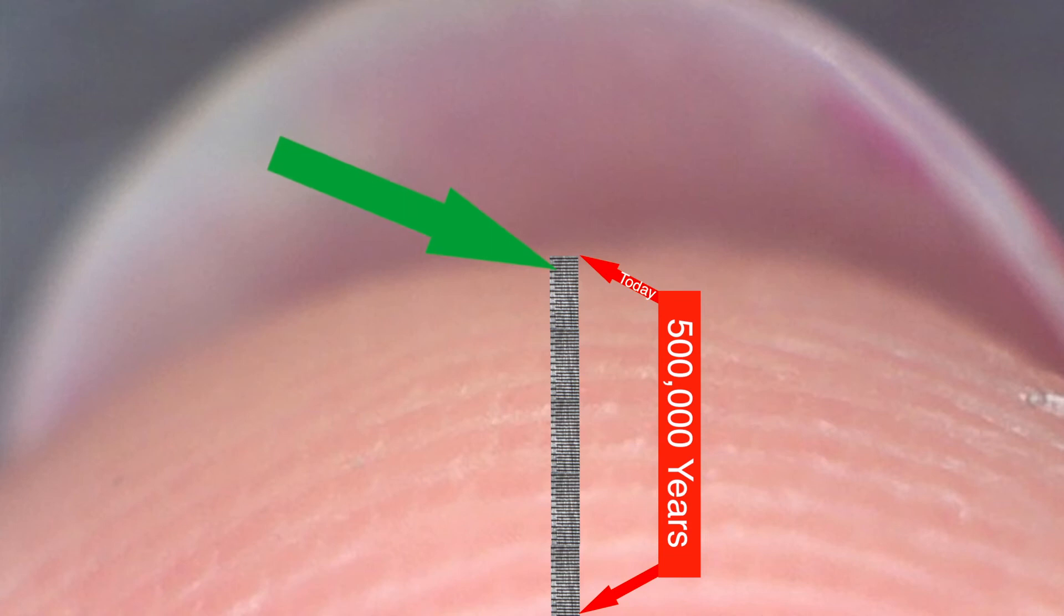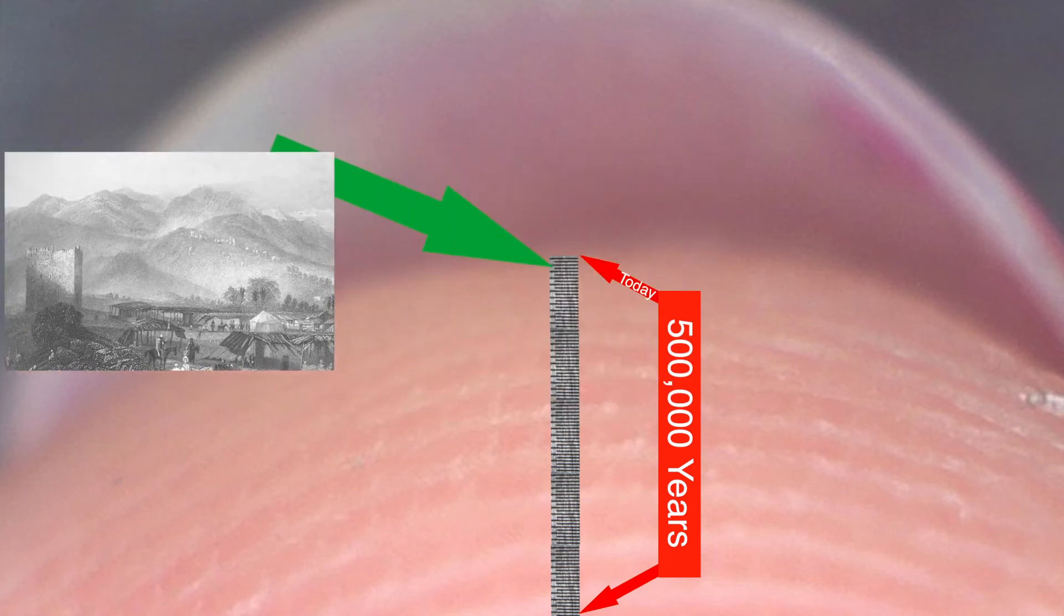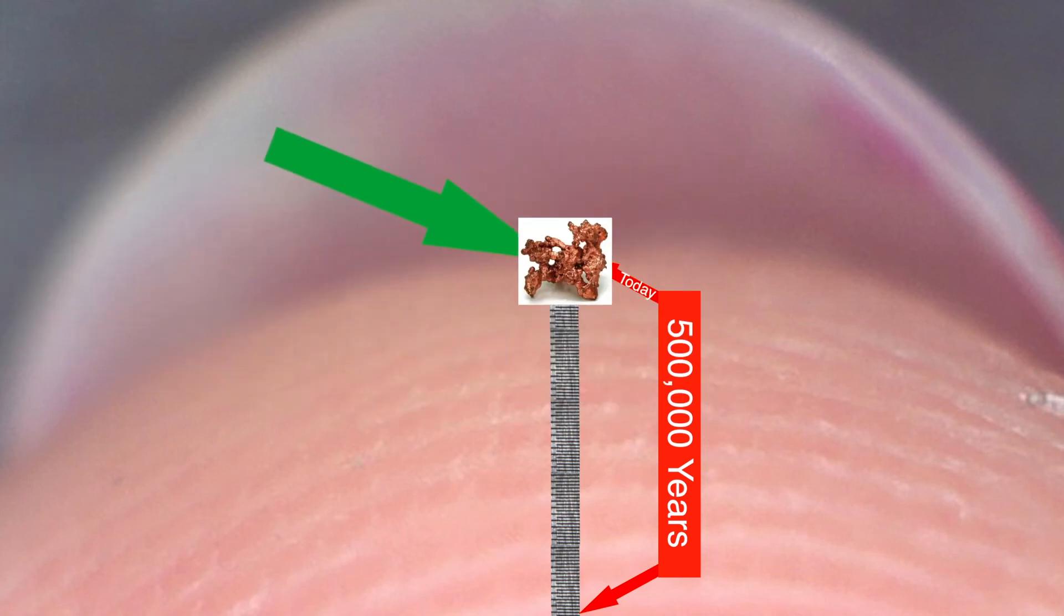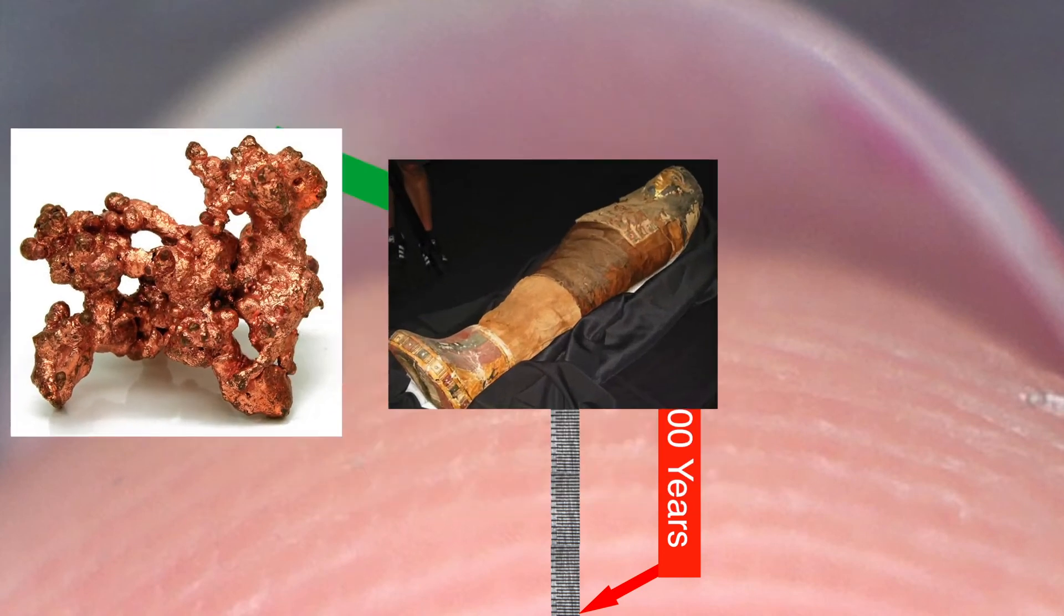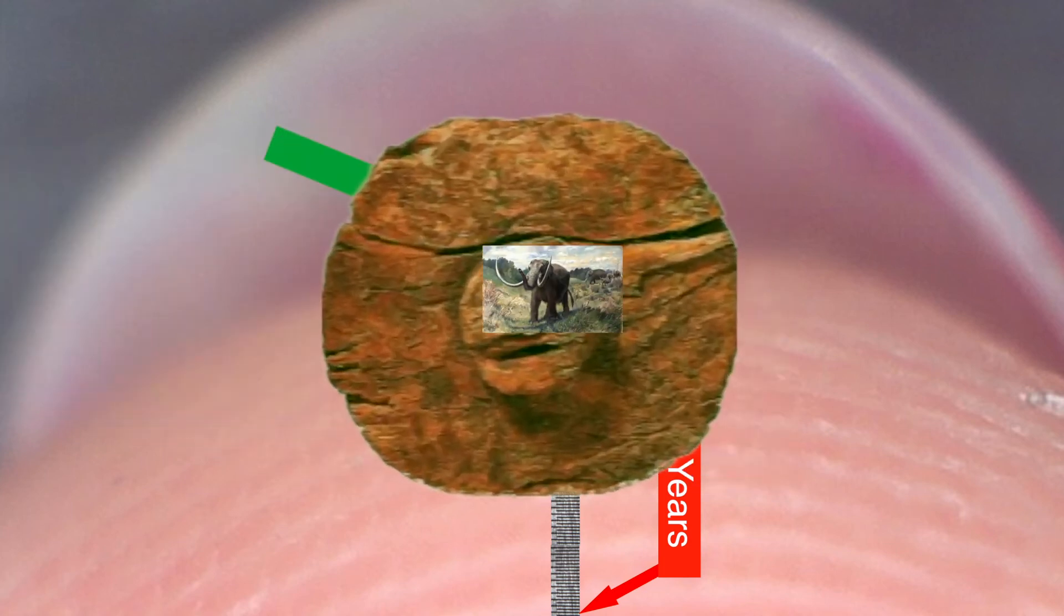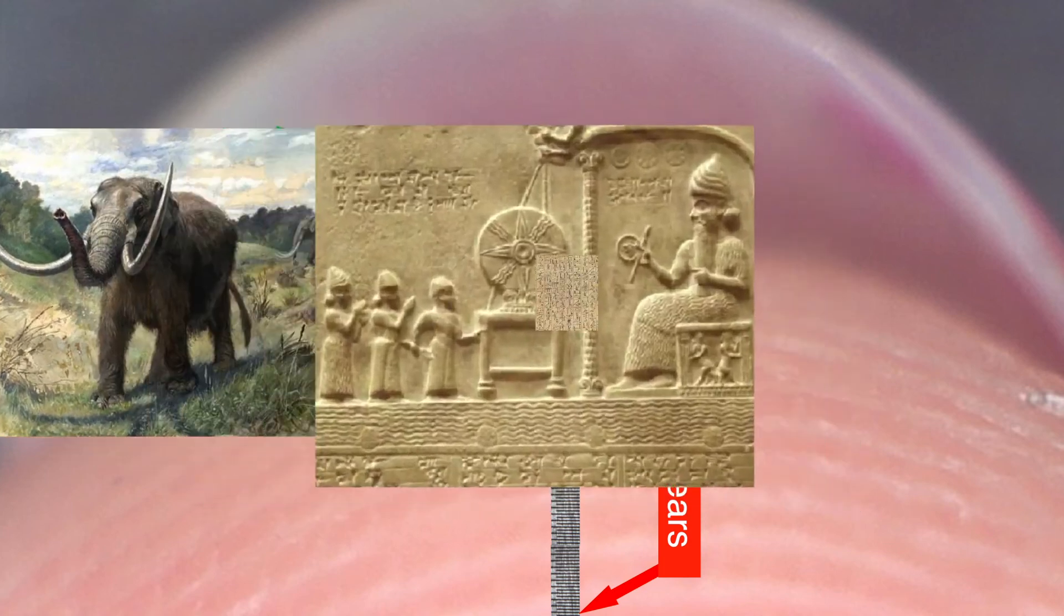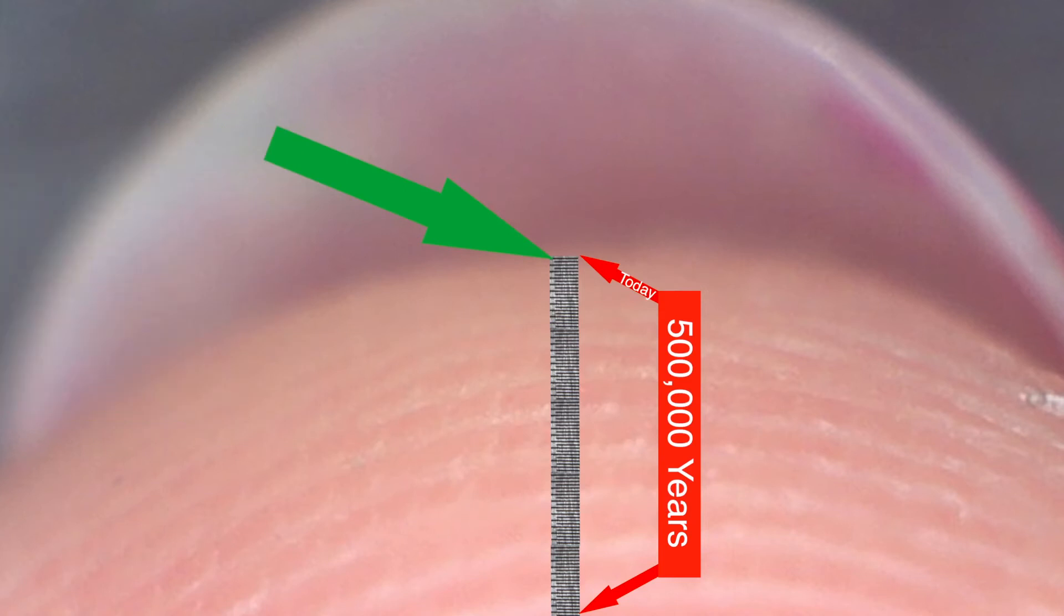Four microns before the present, the ice recedes. Jericho is founded a micron later. The next-to-last micron sees copper smelted, mummies in Egypt, the wheel, the extinction of the mastodon, the Sumerians, writing, and the beginning of recorded human history.